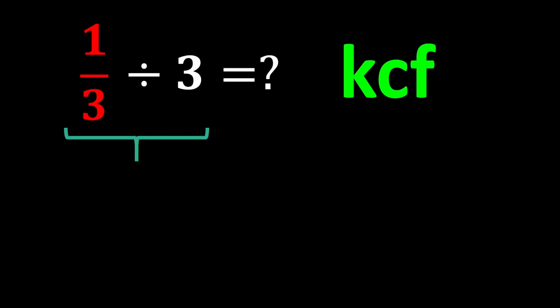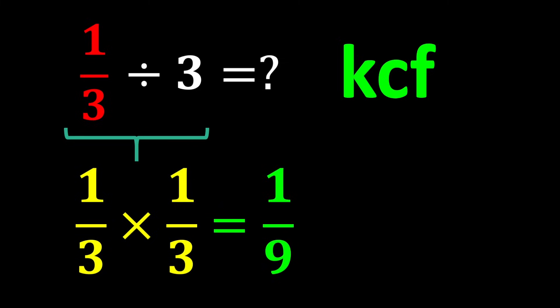To solve this part of the question, we use the KCF rule. K stands for keep, C stands for change, and F stands for flip. Here's how it works. Keep the first number as it is. Change the division sign to multiplication. Flip the second number. Take its reciprocal. Therefore, the expression changes from 1 over 3 divided by 3 to 1 over 3 times 1 over 3. And the final answer becomes 1 over 9.